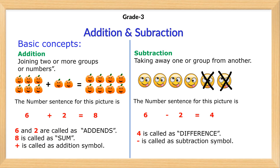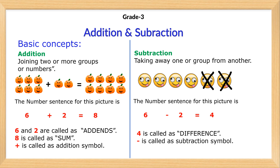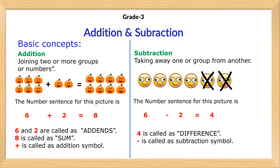Basic concepts: Addition is joining two or more groups or numbers. The number sentence for this picture is six plus two equals eight. Six and two are called addends. Eight is called the sum. Plus is called the addition symbol.